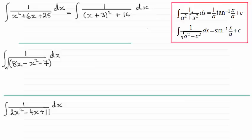This has got exactly the same form as what we have here. The a² is the 16 and the x² is now replaced with (x+3)². And what we have here then is that a becomes 4 and in place of x we've just got x+3. So we end up with 1/4 inverse tan of (x+3)/4 plus that constant of integration.